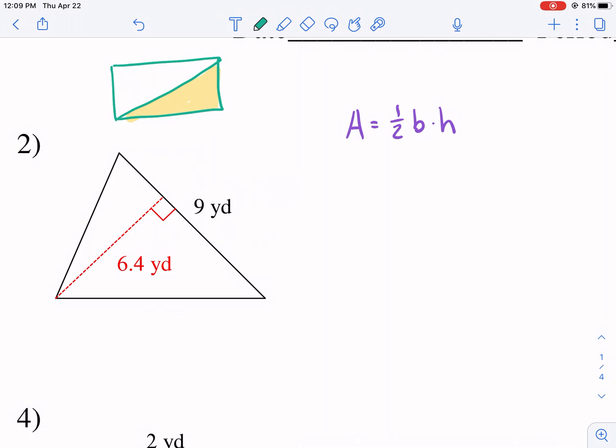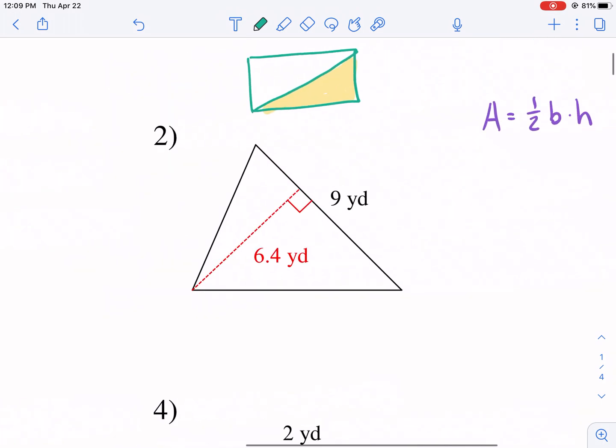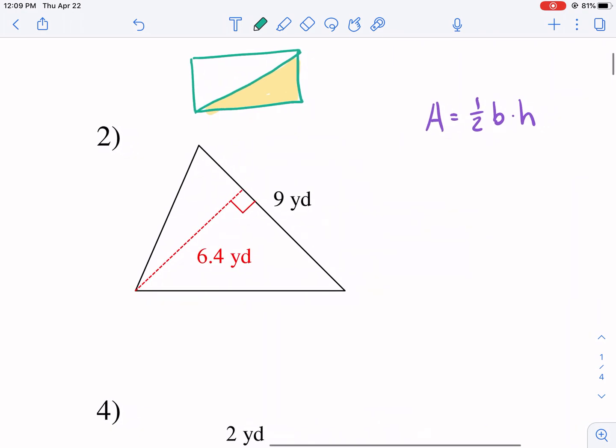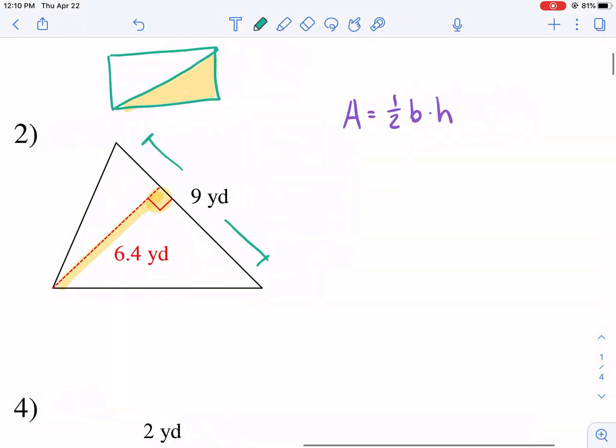Now the important measurements to know is we call it something a little bit different, not length and width, but this time base and height. Our base and height always need to be perpendicular to each other. This is a very key part of the equation. It's very important that we have that as perpendicular, the right angle for the height.